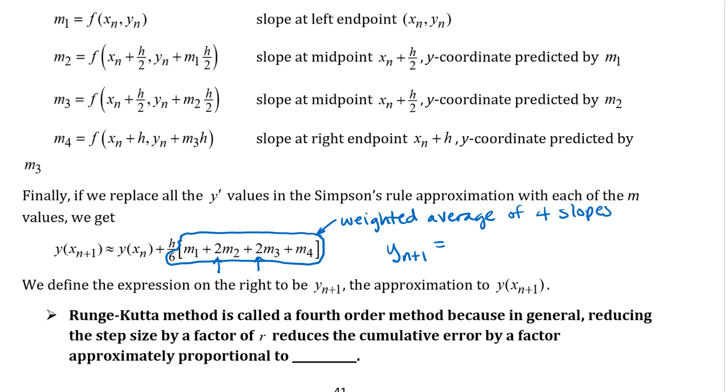I've got my next y value is my prior y value plus this fancy slope that is the weighted average of four slopes times my h value or my delta x. So it's essentially just that equation of the line it's just that I've done a lot of work here to get a really fancy kind of approximation for the slope that I'm going to use. So a lot more calculations at each iteration. You're really calculating four different slopes at each iteration.